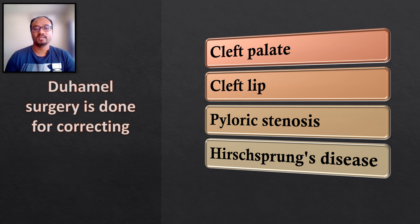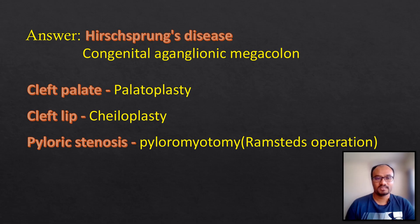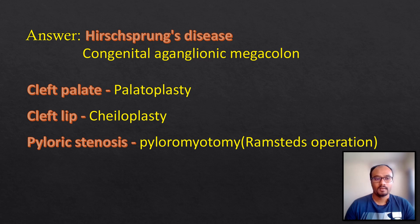The next question: Duchamel surgery is done for correcting — and the options are cleft palate, cleft lip, pyloric stenosis, and Hirschsprung's disease. The correct answer is Hirschsprung's disease, which is also called congenital aganglionic megacolon. The surgery for cleft palate is called palatoplasty.